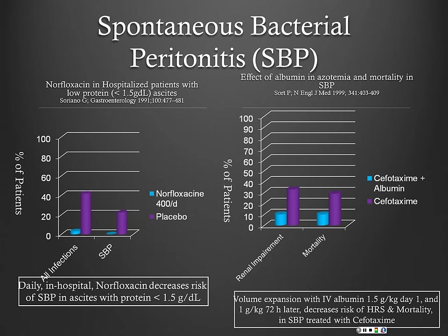This shows the effect of albumin on azotemia and mortality in SBP. Volume expansion is important not only in treatment of ascites, but also in patients who have infection. The dosing is a little different: rather than 6 to 8 grams per liter of ascites, we give 1.5 grams per kilogram on day one when we discover they have infection.